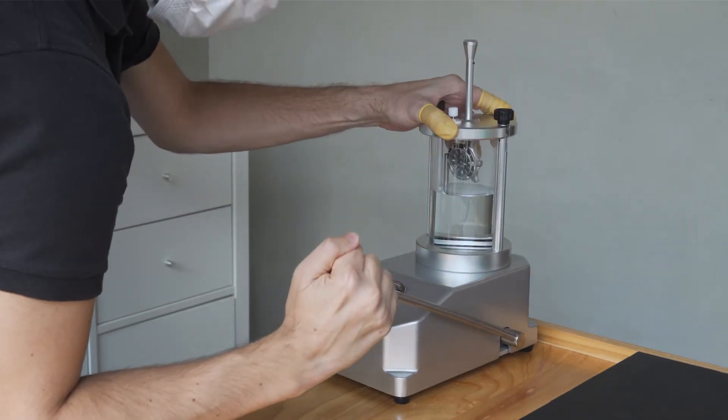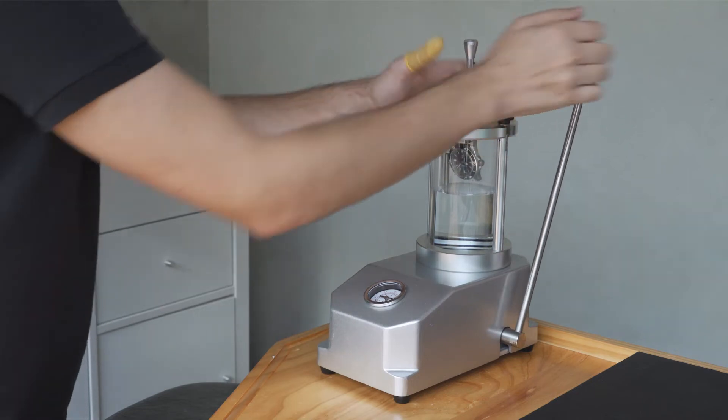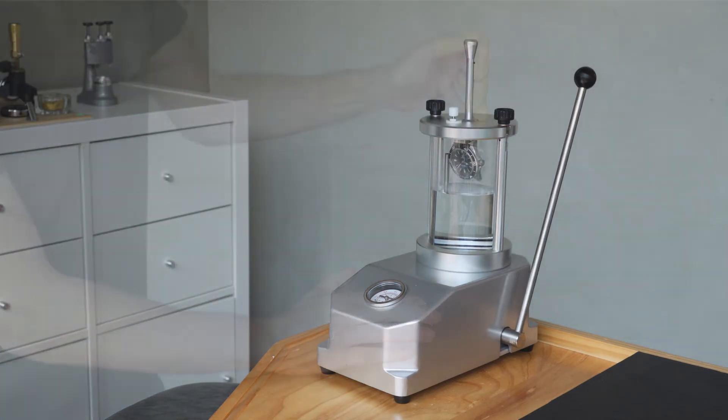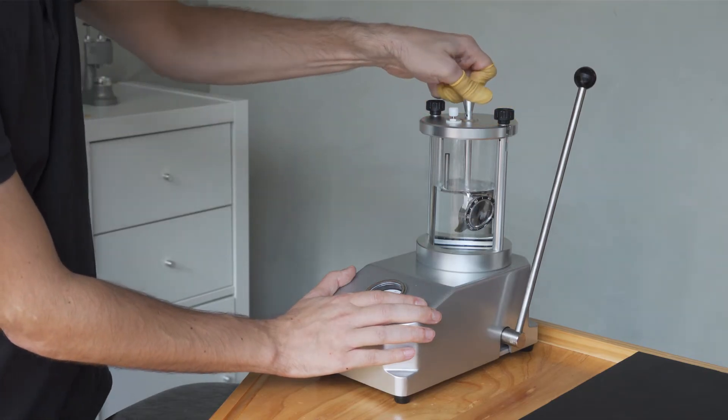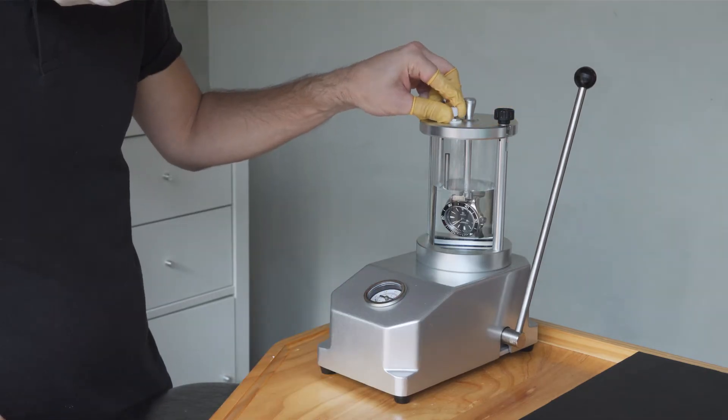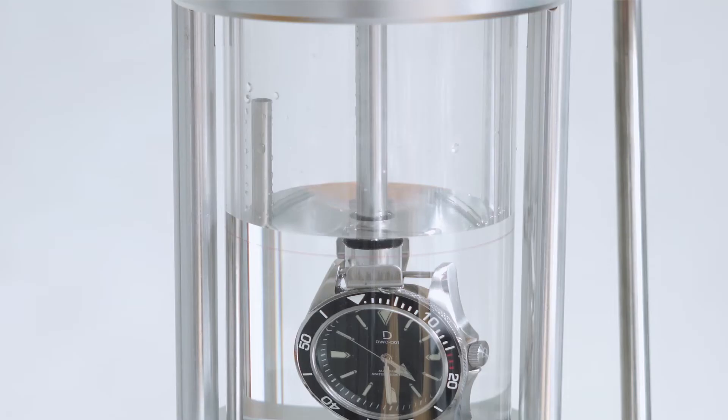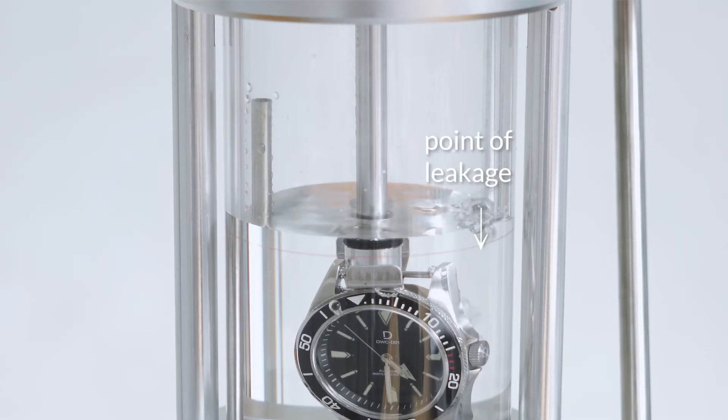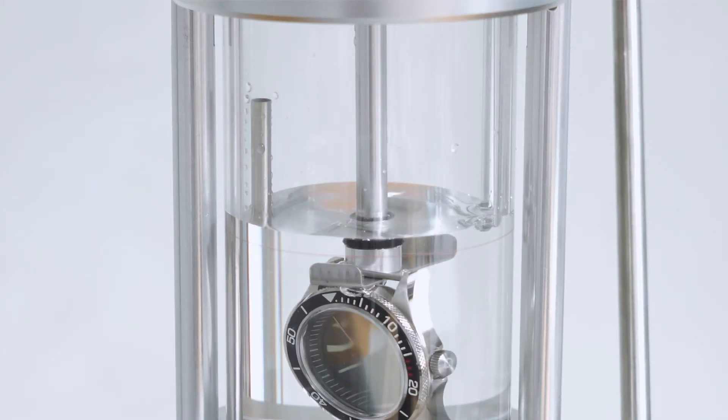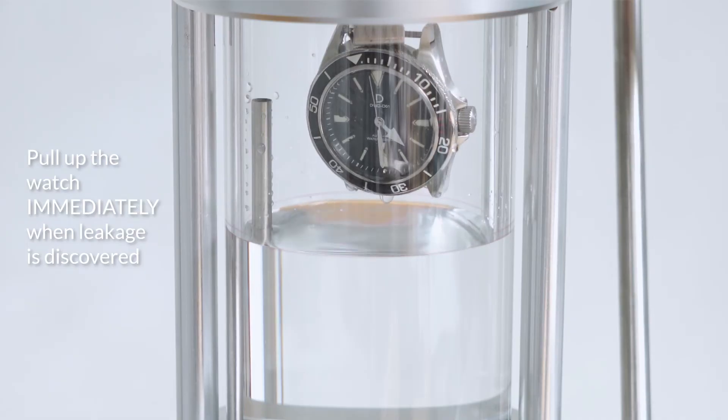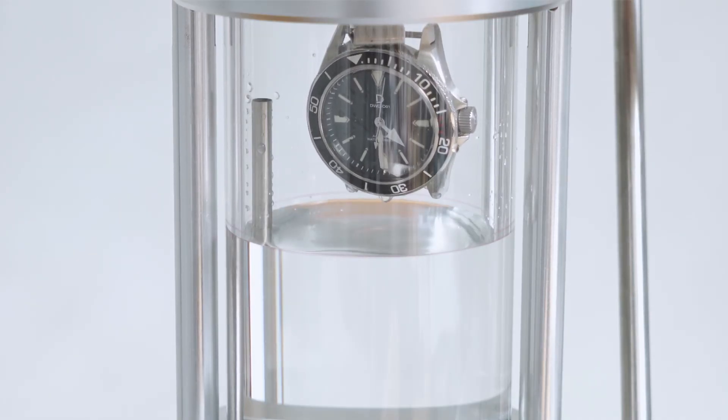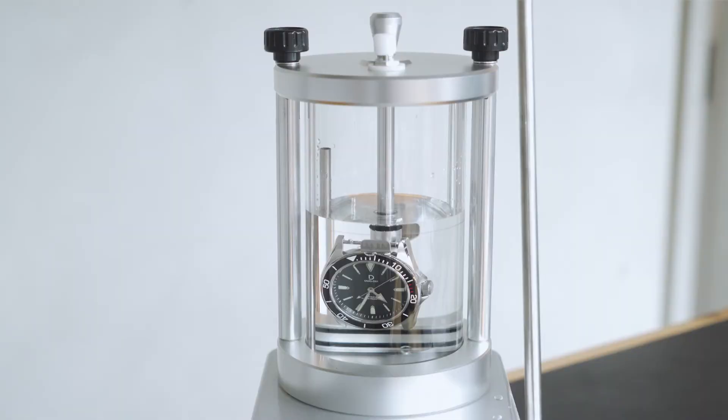We'll now repeat the process. Pump air and wait a minute. But this time, we'll submerge the watch into the water, then start slowly releasing the air at once. Pay close attention to any streams of bubbles emerging from the watch. If you see one, it means there's a water leakage at that particular point on the case, and you should immediately pull up the watch and then release the rest of the air afterwards. This is to prevent more water from leaking into the case.